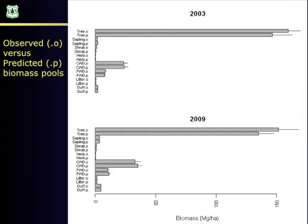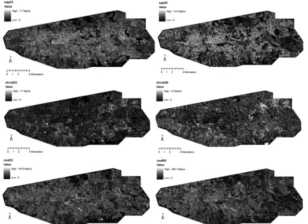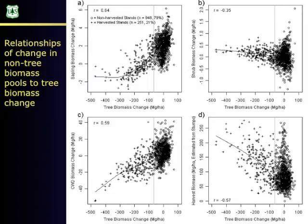Here are some of those maps. The upper two maps are sapling biomass for 2003 and 2009 — similar patterns, which is encouraging. The next pair are shrub biomass for 2003 and 2009, again showing similar patterns. At the bottom is coarse woody debris biomass for 2003 and 2009. I also plotted the change in these other biomass pools as a function of tree biomass change, with tree biomass change on the x-axis and the other pools — saplings, shrubs, coarse woody debris — on the y-axis.